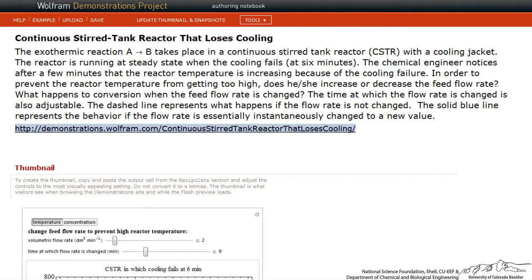This is an example where we have a continuous stirred-tank reactor that has a cooling jacket, and we're going to model it as losing cooling at a certain time. The question is how do we minimize the maximum temperature that it's going to reach?